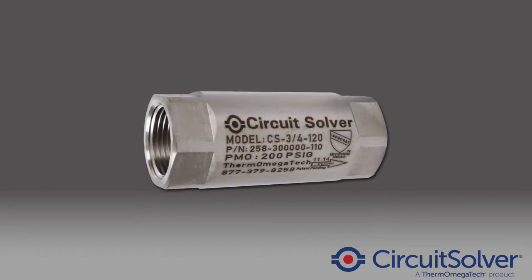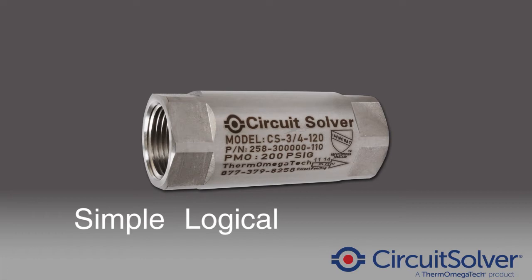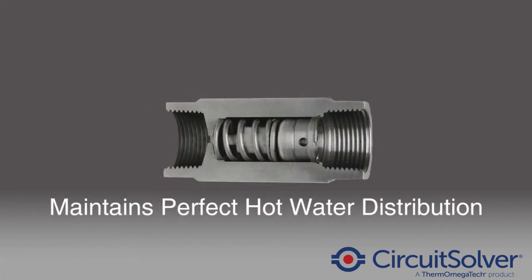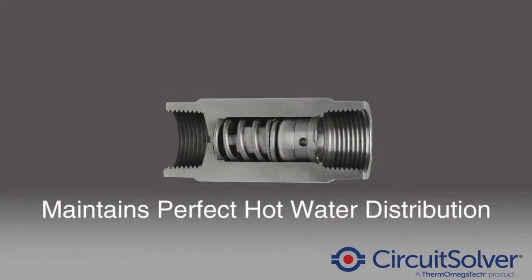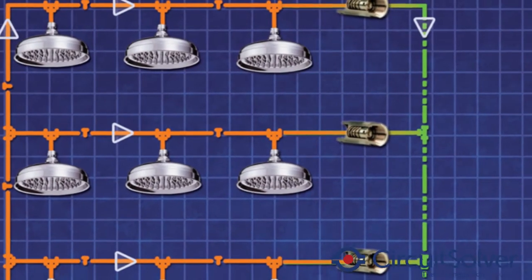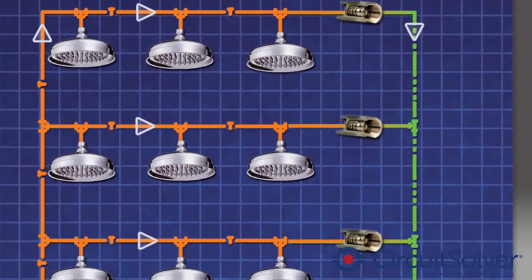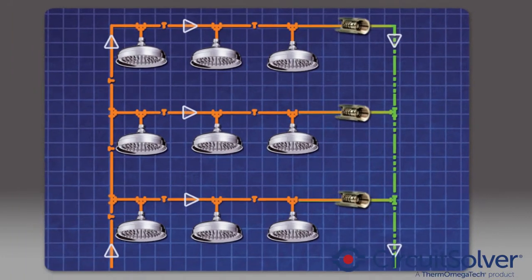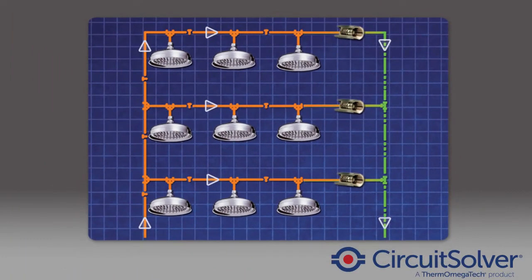CircuitSolver is a simple, logical, trouble-free way to maintain perfect domestic hot water distribution throughout any building. Simply installing CircuitSolver immediately downstream of the last fixture run out, and before the line tees into the common return line, will solve all your hot water temperature distribution issues.